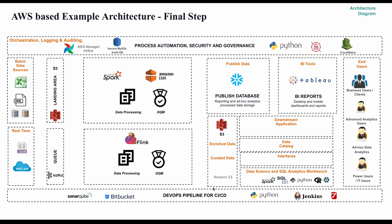For observability and data quality, one of the most common tools to learn is AWS CloudWatch for logs and observability. You can also learn Great Expectations for setting up data quality pipelines.